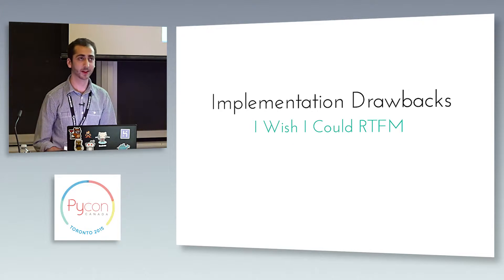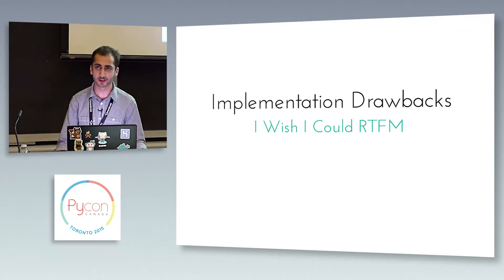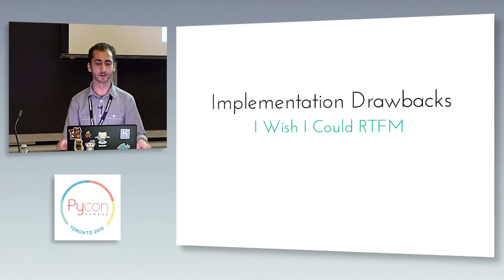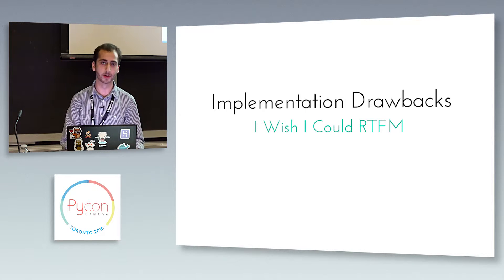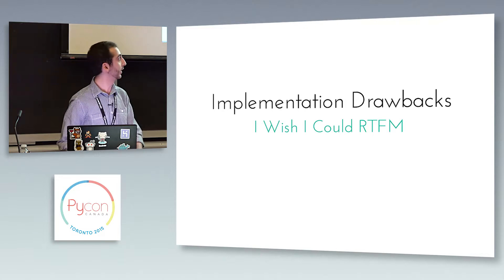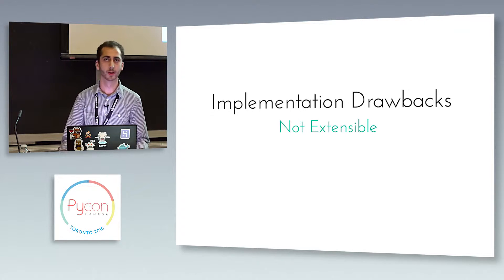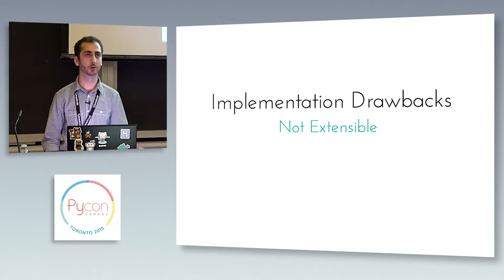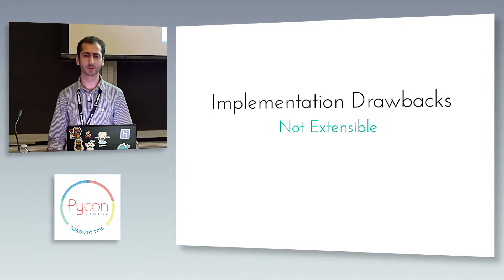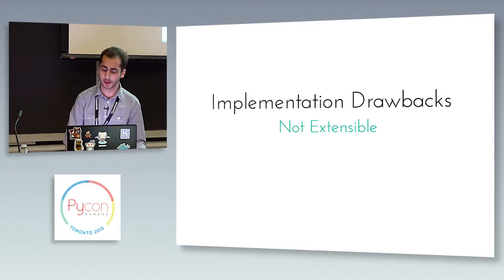Another problem: there were no docs. There were some sparse comments in the code, and the code was sort of all over the place in different apps — very hard to follow and understand exactly what was happening. And by extension, it wasn't extensible. If I wanted to change something about the way financial transactions were sharded as opposed to invoices, it wasn't really straightforward how I might be able to do that.